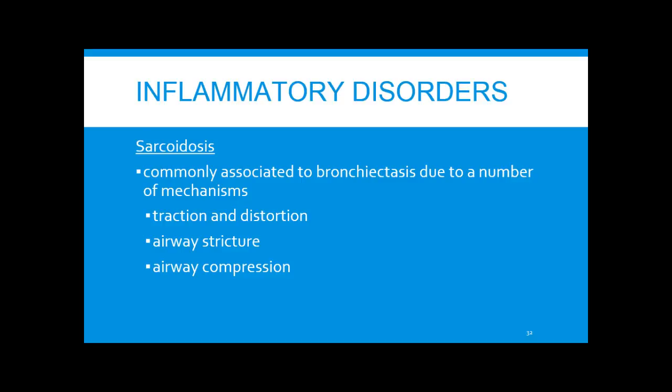Sarcoidosis is commonly associated with bronchiectasis due to a number of mechanisms. It causes traction and distortion — especially with fibrosis — airway stricturing, and airway compression. All of these can lead to a localized inflammatory reaction and ultimately airway destruction.